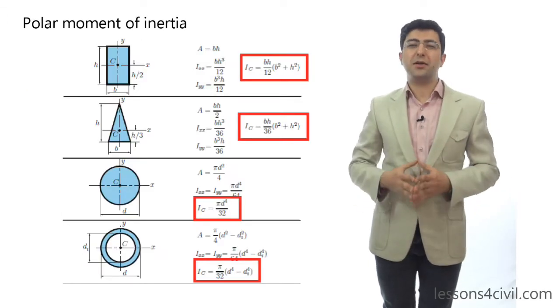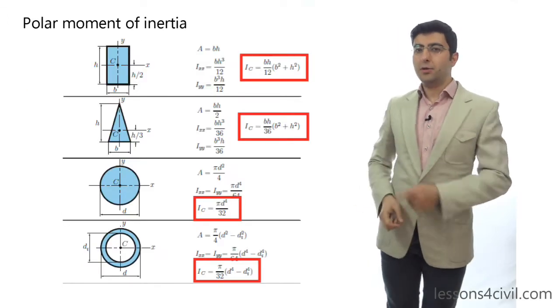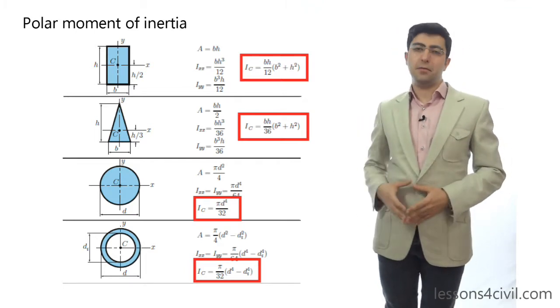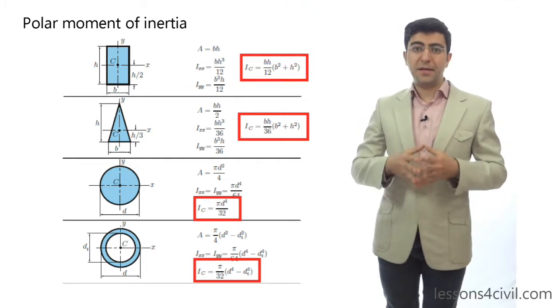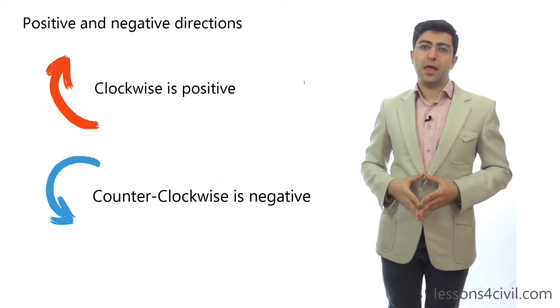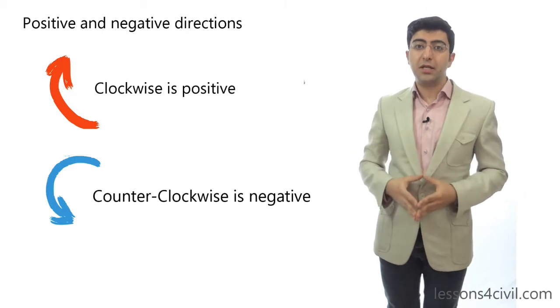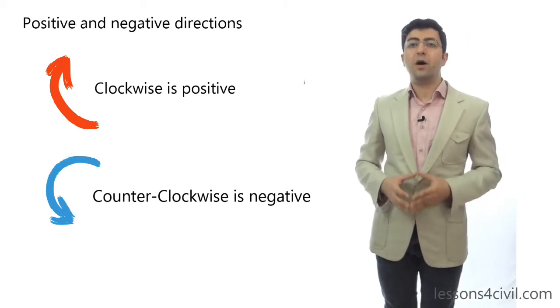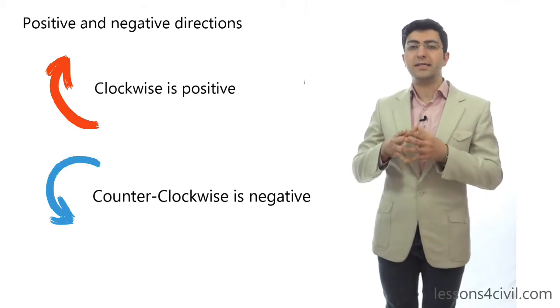Other cross-sections are actually less practical. But you can calculate the polar moment of inertia based on this table. You can find the PDF version of this table on our website. And about the convention of positive direction, we assume a clockwise torque as a positive torque, while a counterclockwise is negative.